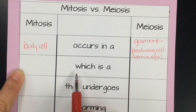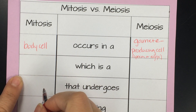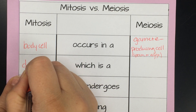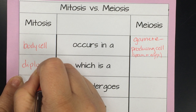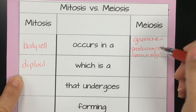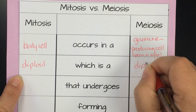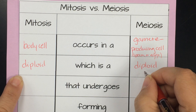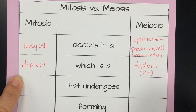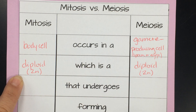So which is A? Originally your body cells are all diploid, and that original gamete-producing cell is also diploid. So they are both 2N when we write the shorthand.